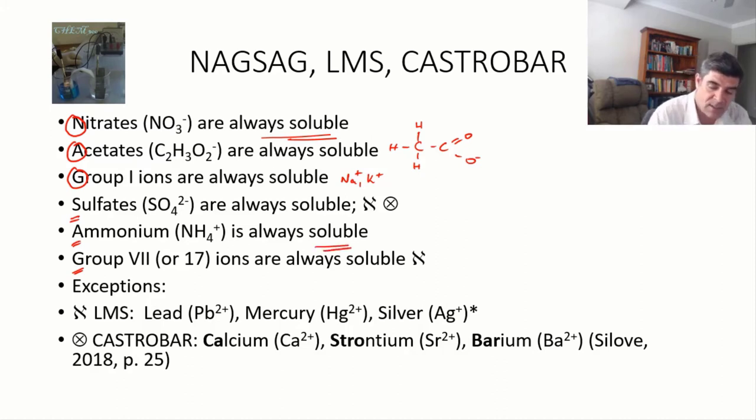ammonia is a nice easy one because ammonium ions are always soluble, but for the sulfates and the group 7, they are always soluble, except there are some exceptions. So the NAGSAG are the general rules, and our LMS, CASTROBAR, are our exceptions.